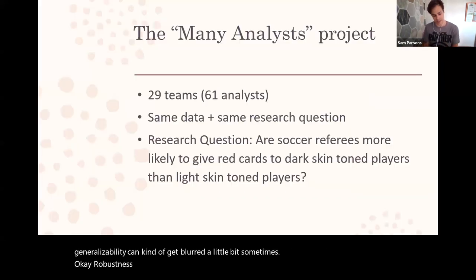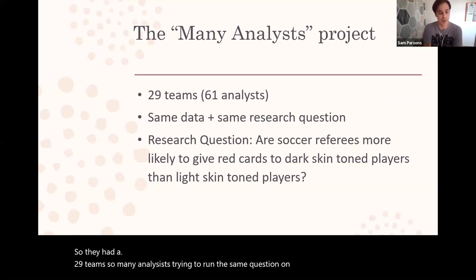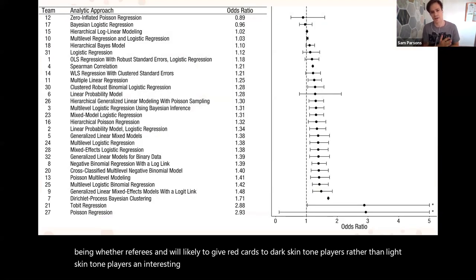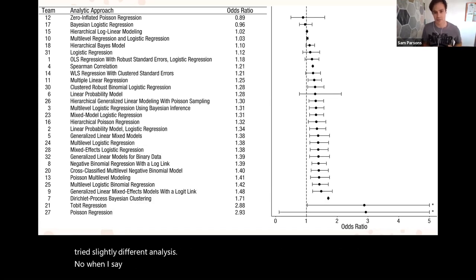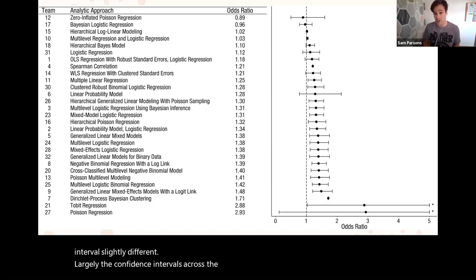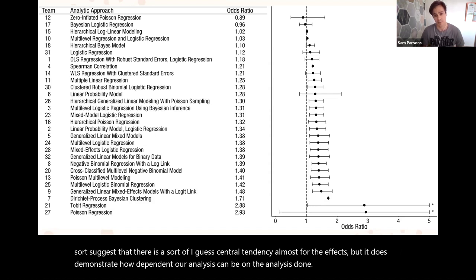Okay, robustness. We'll quickly go through the Many Analysts project because I love it so much. They had 29 teams, so many analysts trying to run the same question and the same data. The question being whether referees are likely to give red cards to dark skin tone players rather than light skin tone players. Interestingly, everyone got different results largely because everybody tried slightly different analyses. When I say different results I mean the point estimates were different, the confidence intervals slightly different. Largely the confidence intervals across the analyses overlap which is encouraging. I think it does suggest that there is a central tendency almost for the effects, but it does demonstrate how dependent our analyses can be on the analysis done and the appropriateness of that.